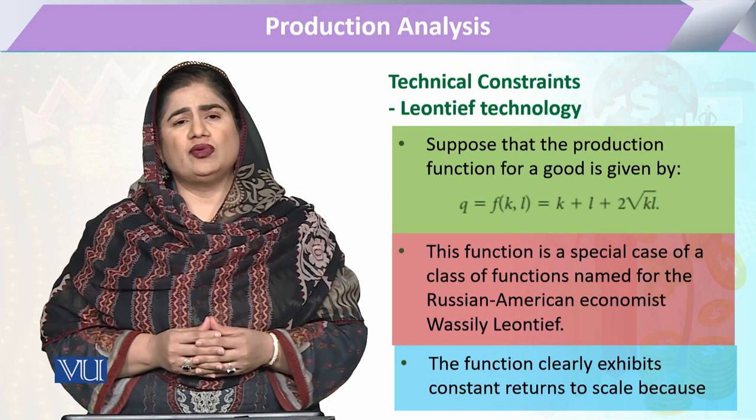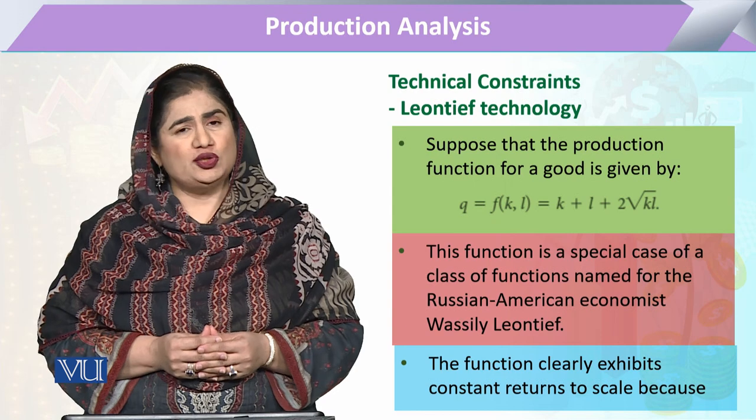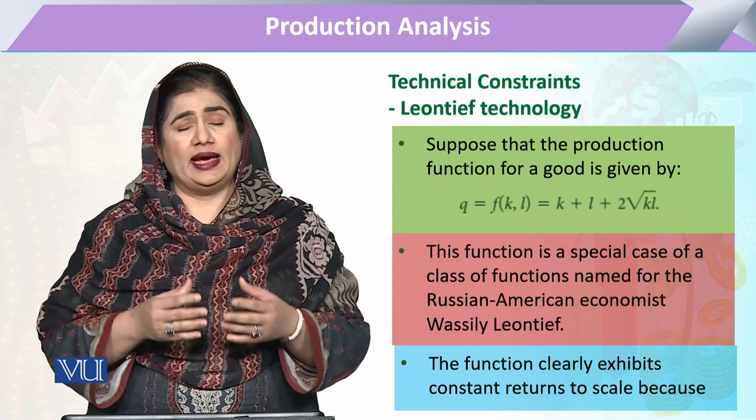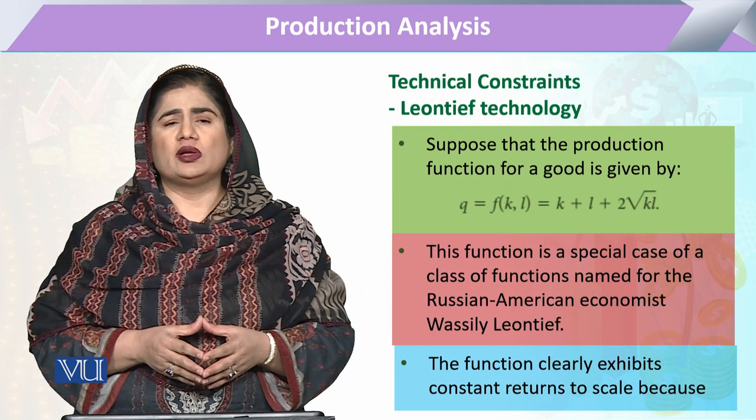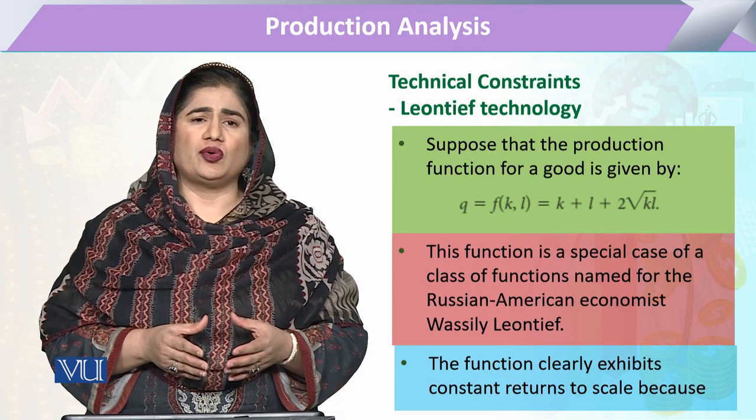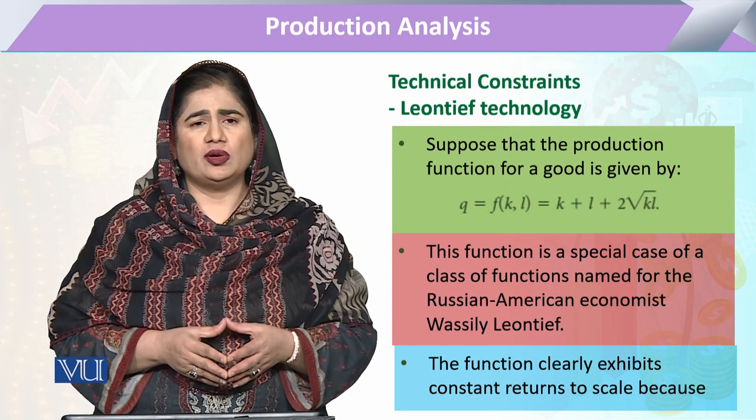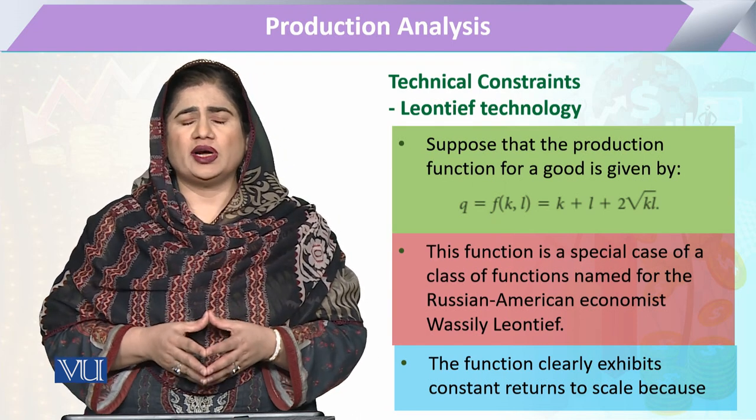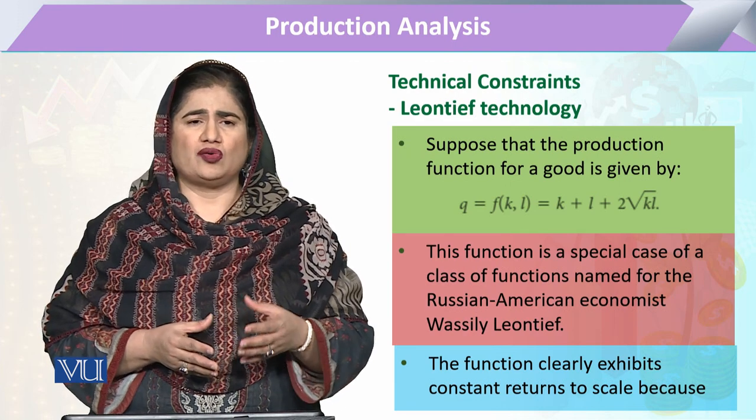When we see constant returns to scale, it will be homogeneous of degree one. It has to be expected that it will follow the product exhaustion theorem or the Euler theorem, and the marginal productivities of all inputs will exhaust the total output.